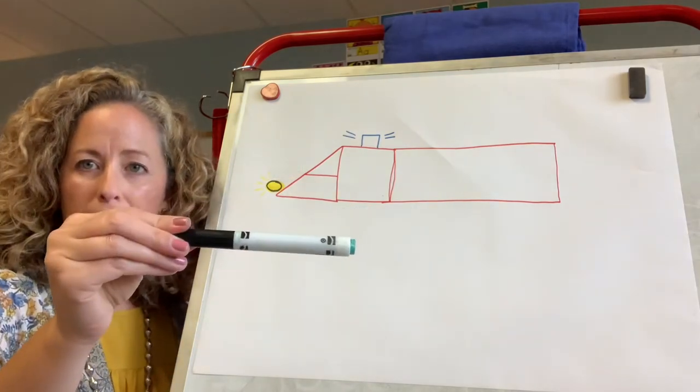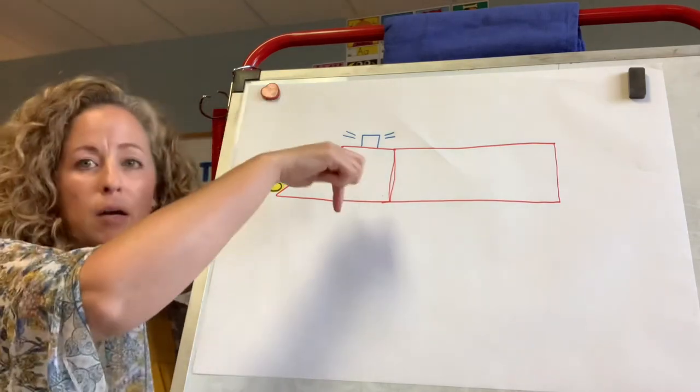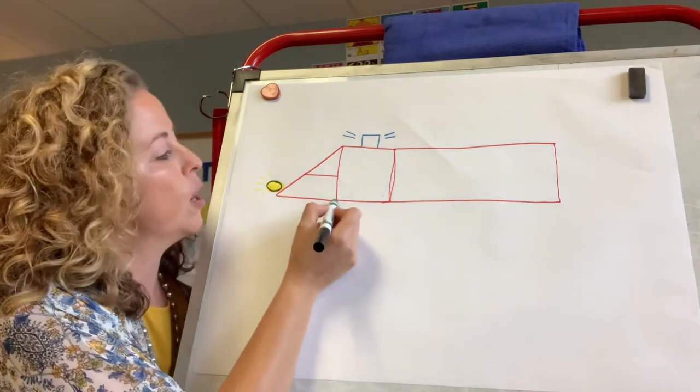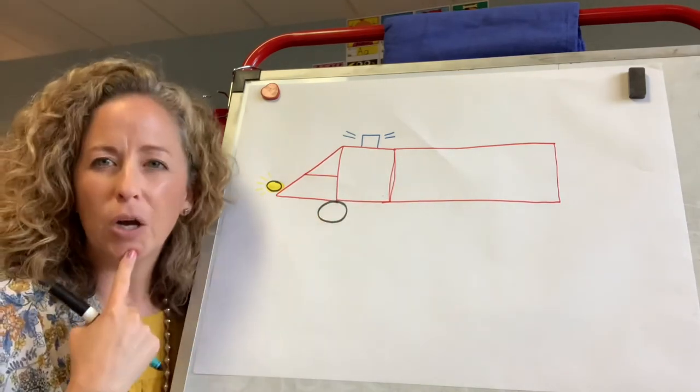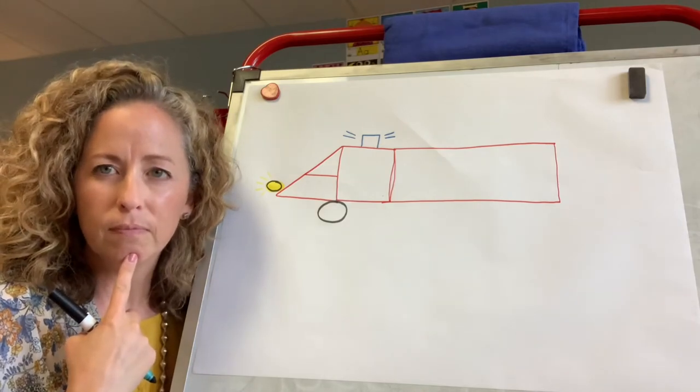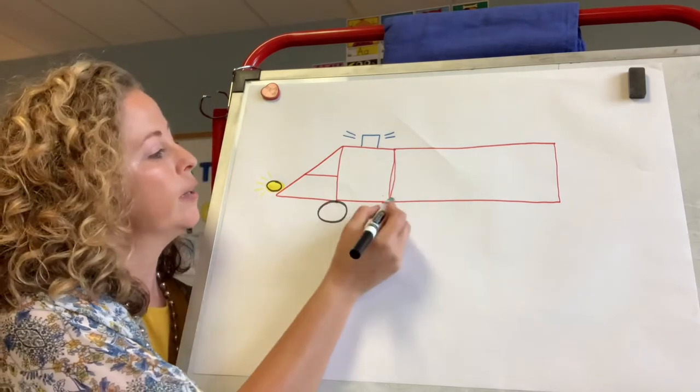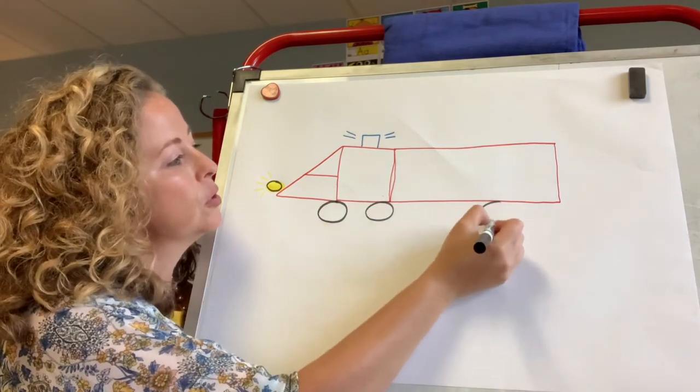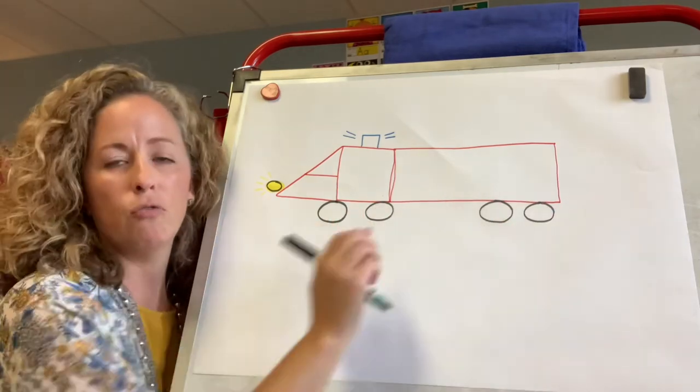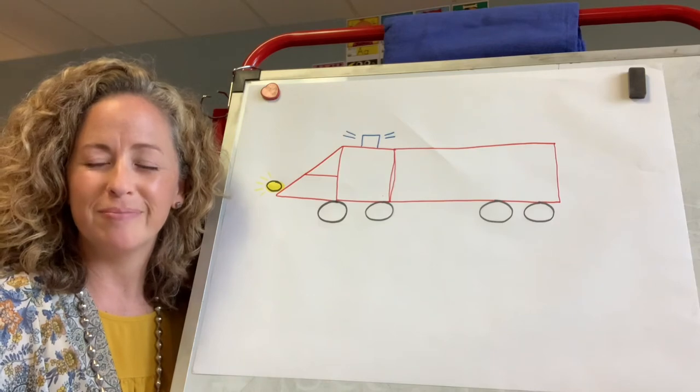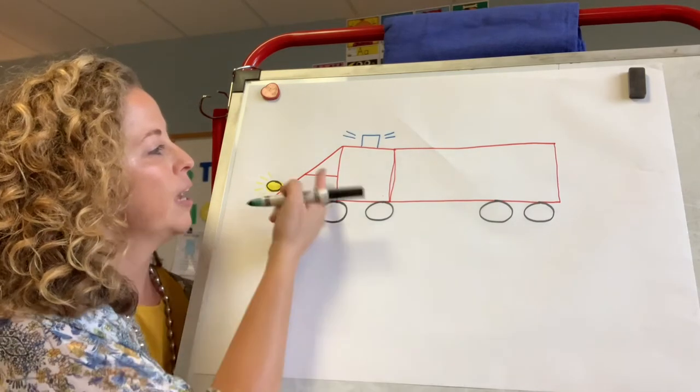Now I'm going to switch to black and I'm going to make wheels down at the bottom of the firetruck. I know wheels go around and they are shaped like a circle. How will I know how many? That's right, I count. I'm going to count four: one, two, three, four. Four wheels on the firetruck.